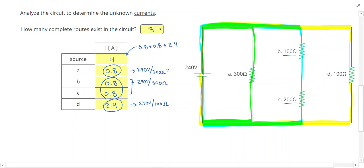You'll notice that the most current always travels through the path with the least resistance.